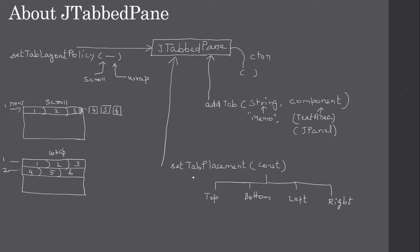Using the setTabPlacement function call, you can pass any of these constants: top, bottom, left, or right. That will decide where to show the tabs. If you say top, the tabs will appear at the top; bottom means tabs are added towards the bottom; left means shown on the left side; and right places tabs on the right. Based on this constant, the tab position will be decided.